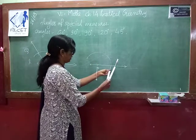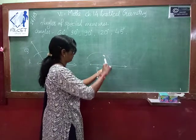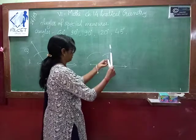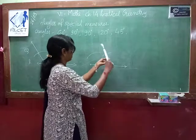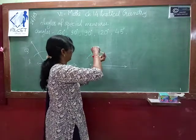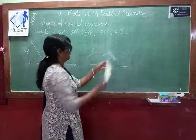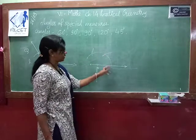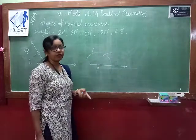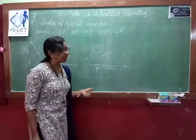So first we draw 60 degrees, then another 60 degrees. Now 60 plus 30 will give you 90 degrees.